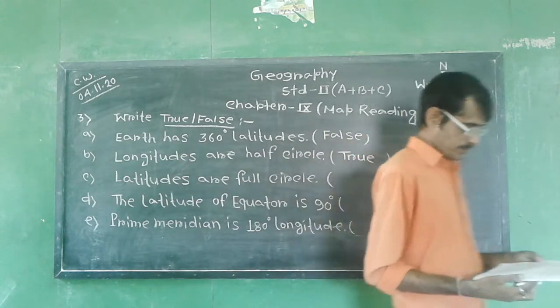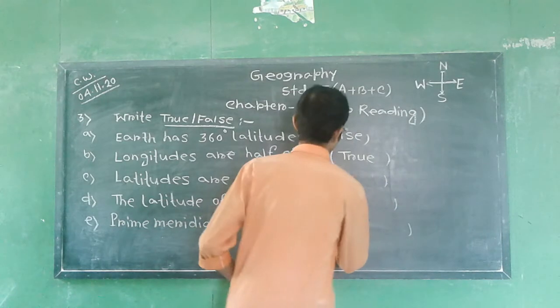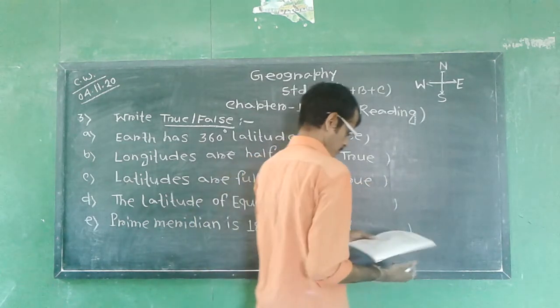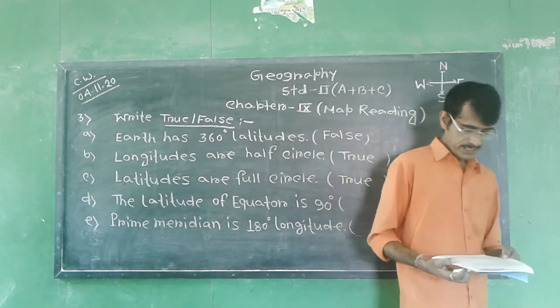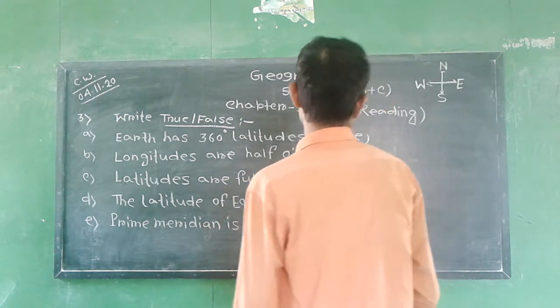Next, latitudes are full circle - true. Next, D. The latitude of equator is 90 degrees - false.